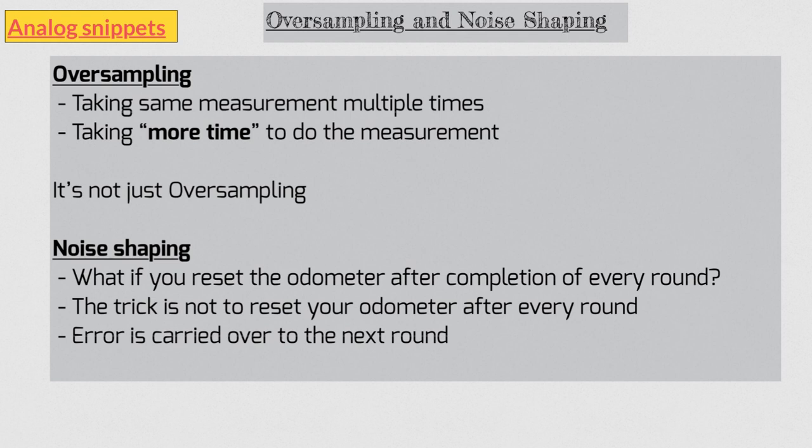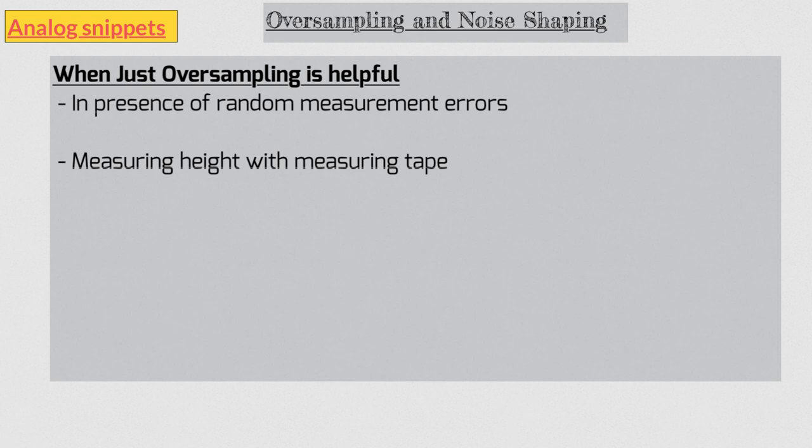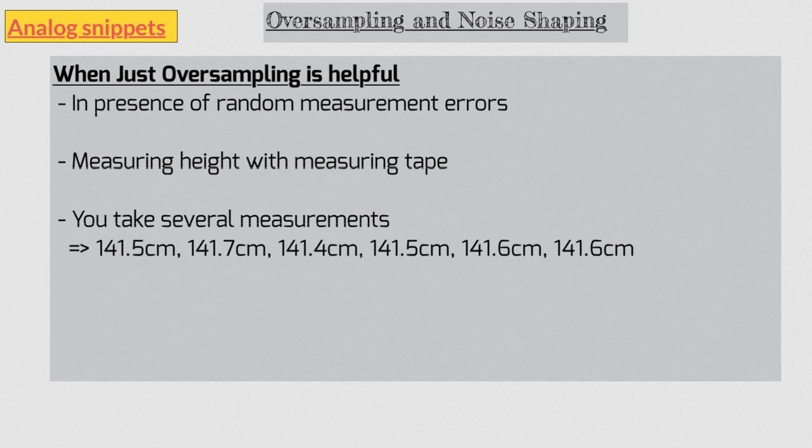Just to be sure, in some cases, just oversampling can improve your precision. Let's say you are measuring something which has a random measurement error. For example, let's say you are measuring height of your child using a measuring tape. Since measuring tape is an awkward device and your child cannot stay still, you make errors in every measurement. So you take several measurements. So you are doing oversampling here. And you are also doing every measurement afresh so you are resetting it every time. At the end of several measurements, you take the average and that is your best guess of the measurement. So in this case, you have improved your precision but you are not doing noise shaping.